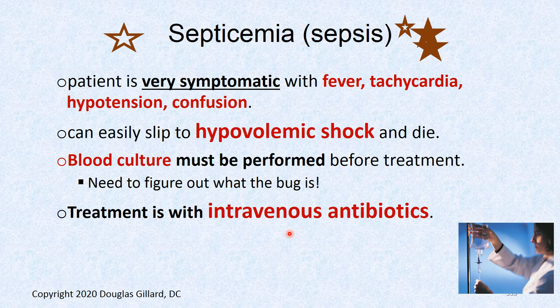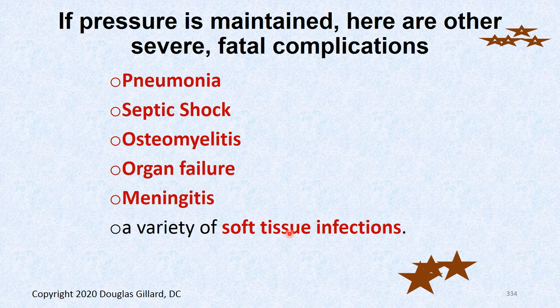A patient in septic shock is very symptomatic with fever, tachycardia, hypotension, confusion, and signs of hypovolemic shock. You must get a blood culture to identify the bug and use proper intravenous antibiotics — not oral. Even after leaving the hospital a PICC line is placed for IV antibiotics. The bugs love to get into the lungs first through the venous system. People can die of pneumonia, septic shock, osteomyelitis, liver and kidney shutdown, and meningitis — just a nasty disease.